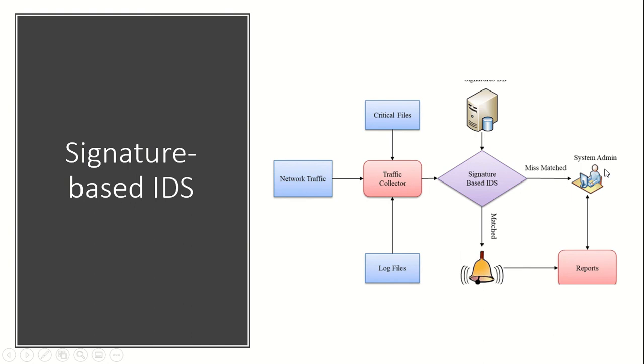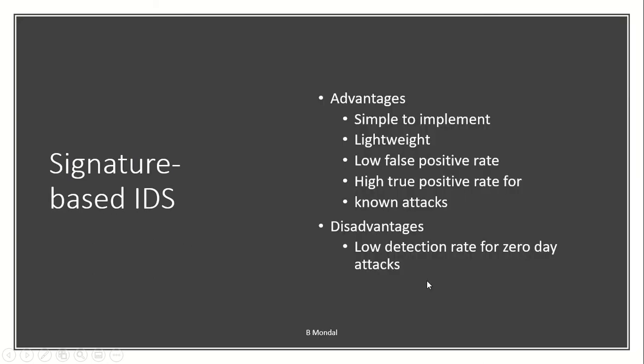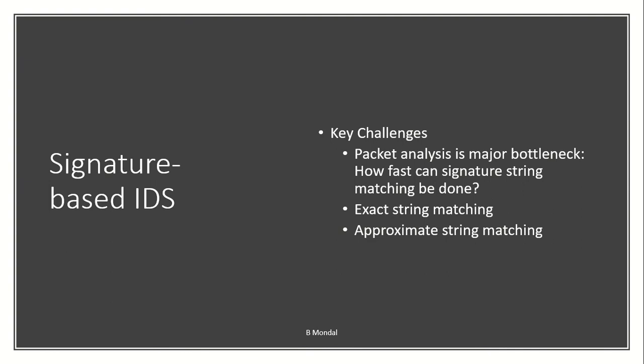The advantages of signature-based detection are that it is simple to implement, lightweight, has a low false positive rate, and a high true positive rate for known attacks. The main disadvantages are a low detection rate for zero-day attacks — if some attack is happening for the first time, it will not be able to detect it. Key challenges include packet analysis being a major bottleneck, how fast the signature string is matched, and how to handle approximate string matching where a string may not match 100 percent.